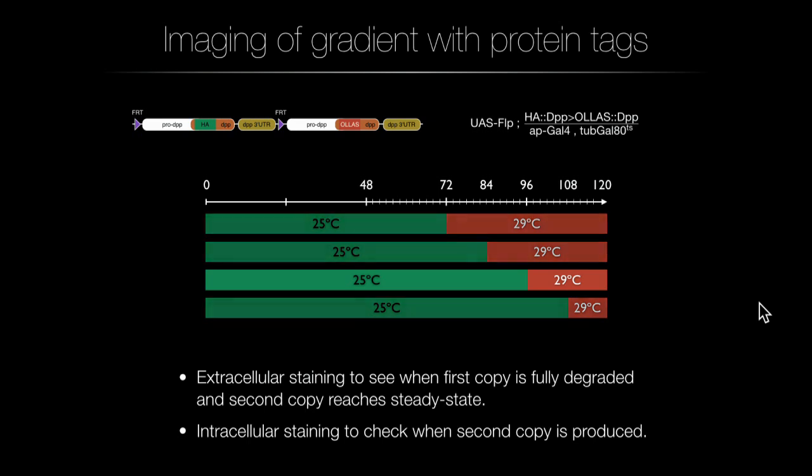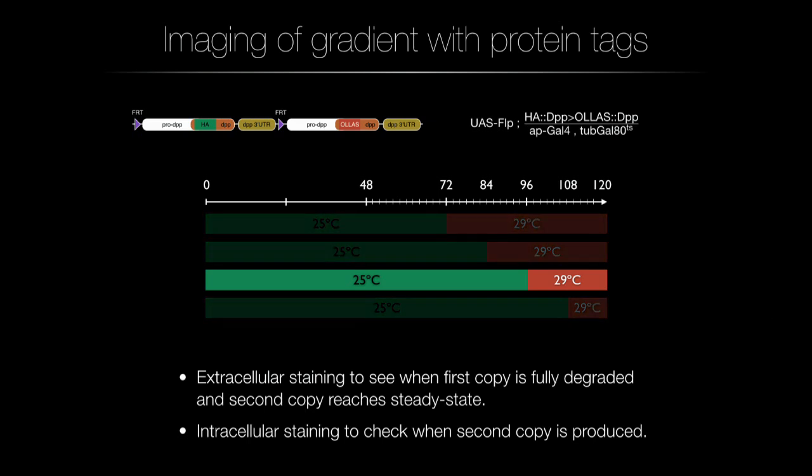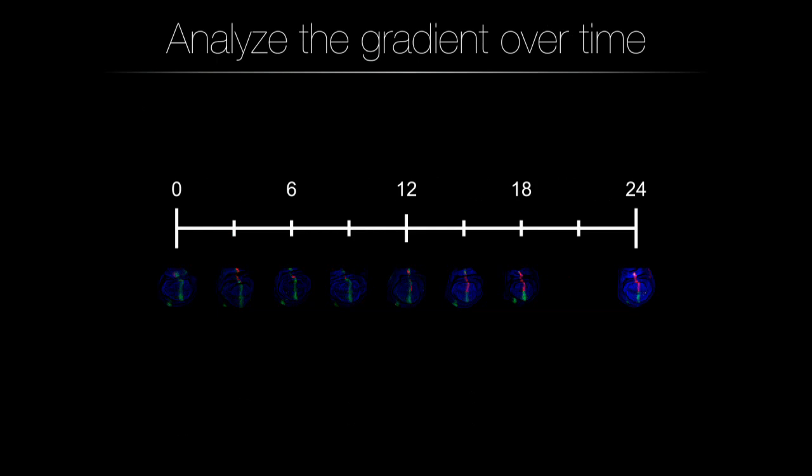From all time points, I found that the last 24 hours are sufficient to study the whole process, because the first protein is completely replaced by the second. With the two different staining approaches — extracellular and intracellular — I can see when the first copy is completely degraded and when the second one reaches its steady-state gradient. With intracellular staining, I can see when the second protein is produced and the first is no longer made.